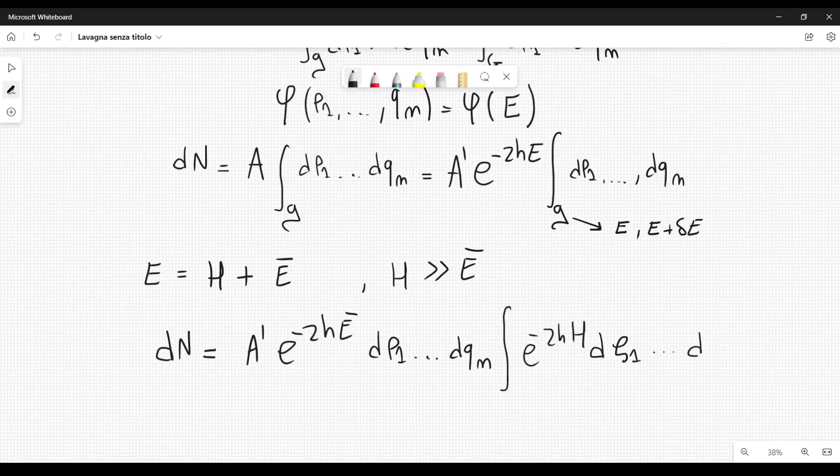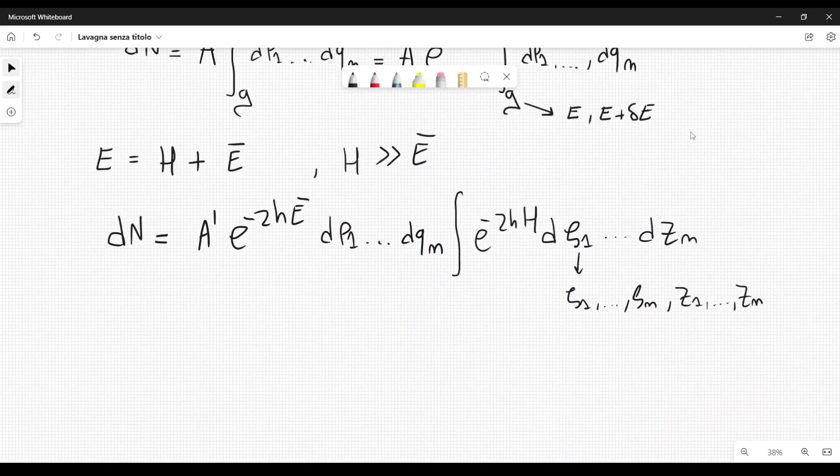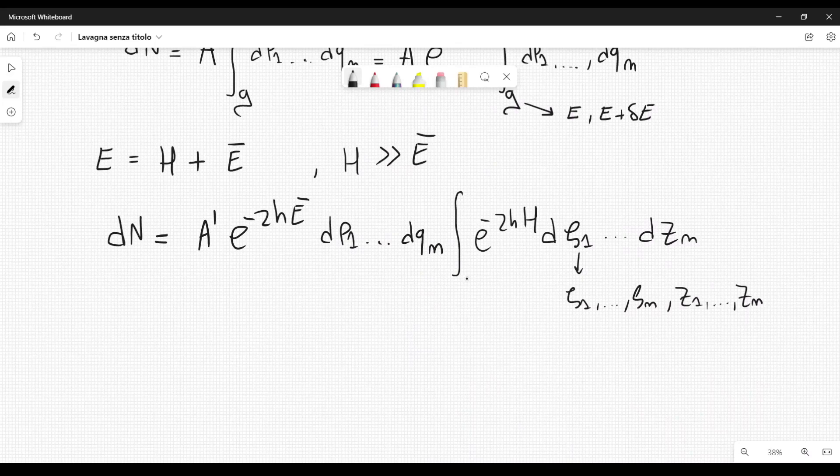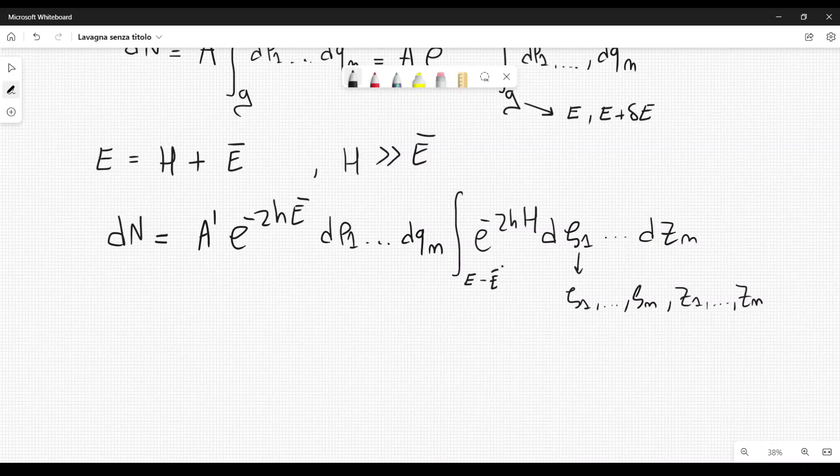D zeta one dot dot dot D zeta n, where zeta one dot dot dot zeta n are the positions. Then I have Z1 dot dot dot Zn which are the momenta. These are the coordinates of the second system. And the integral is bounded by the fact that the energy starts at some value E minus E bar, this difference is H, remember from this equation here, to some other value E minus E bar plus some small increment delta E.